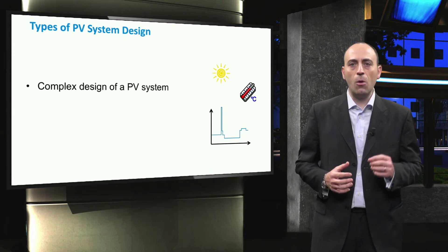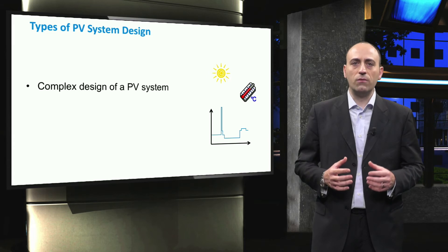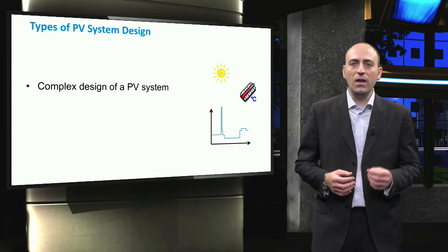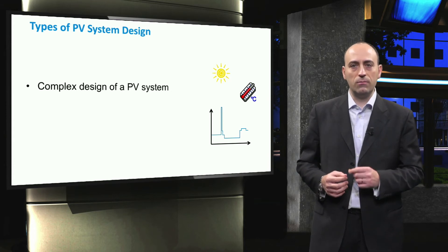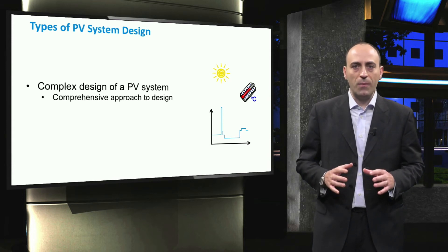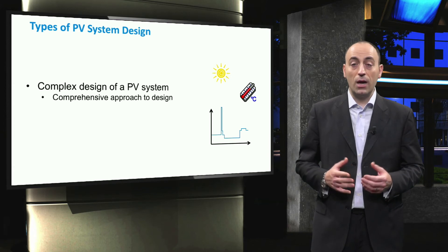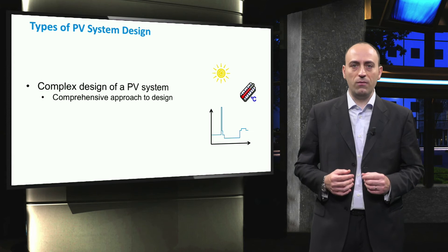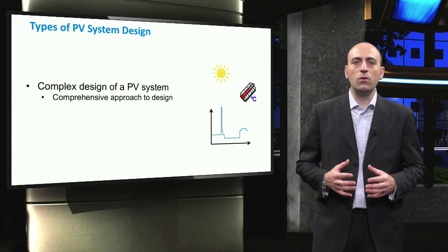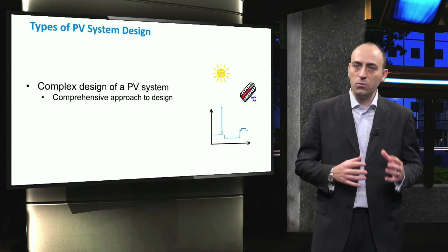The second type of PV system design is the complex design approach. After a first approximation of the design obtained from the previous strategy, a detailed analysis of the PV system performance can be carried out using this strategy. In this respect, the location-dependent variable irradiance and weather conditions, the profile of the loads and the other inputs are used to obtain time-dependent performance characteristics of the PV system. To this end, we are going to put together all models, tools, and steps learned in previous weeks of this course.